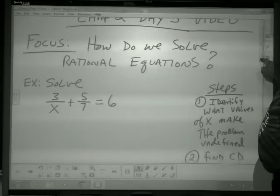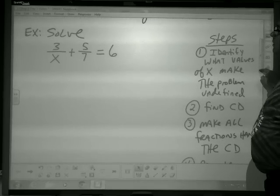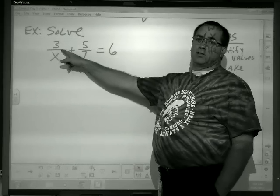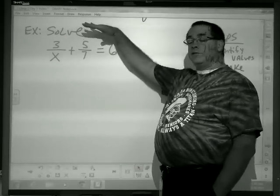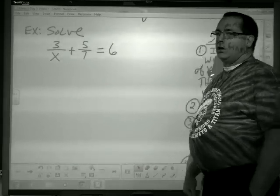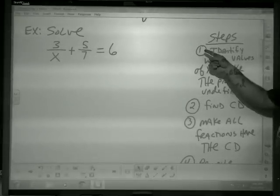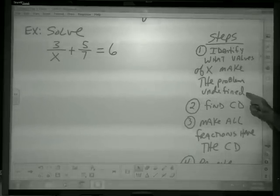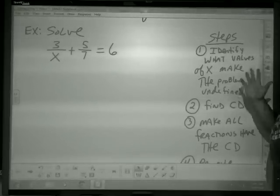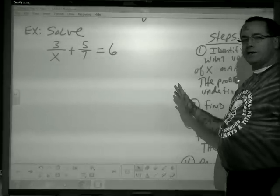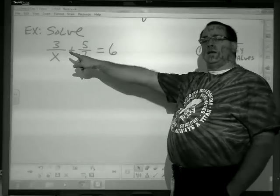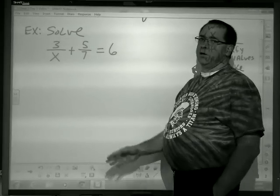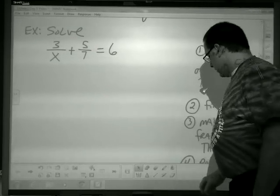Now, on the very first day, we talked about expressions and what x can't be because we don't want 0 in the bottom. So even before we start solving the equation, the first thing we have to do, step 1, is to identify what values of x make the problem undefined. Even before we start solving, we need to know ahead of time what x can't be at the end. And if it turns out to be what makes it undefined, then we would have to reject that answer.